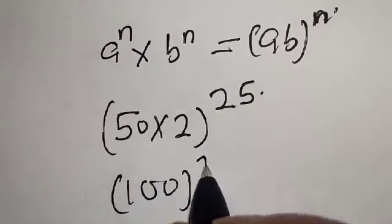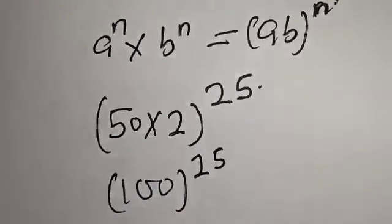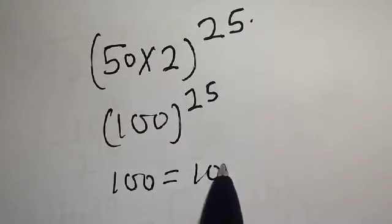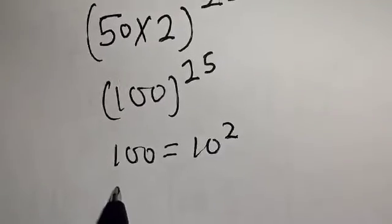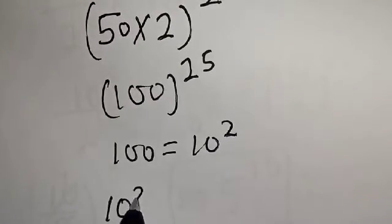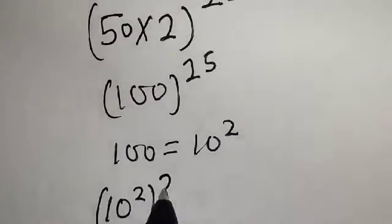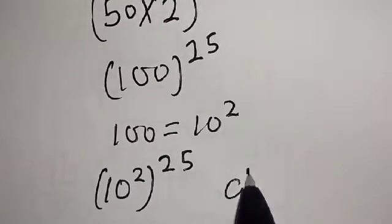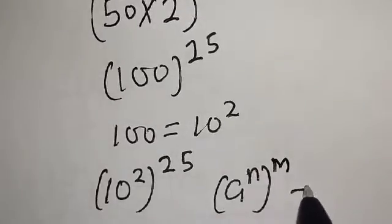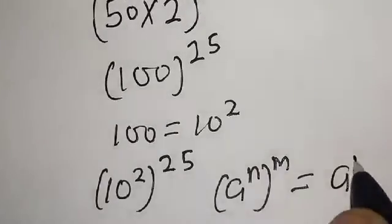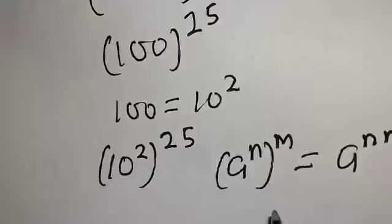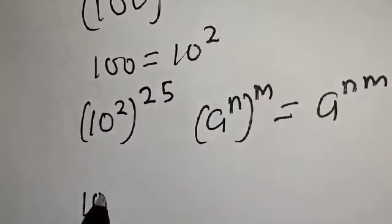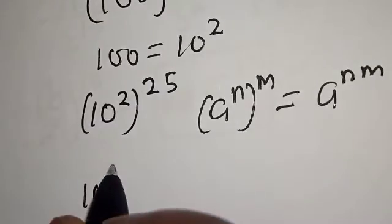100 raised to power 25. But remember that 100 is equal to 10 squared. Then we have 10 squared raised to power 25. Recall that if you have a raised to power n, raised to power m, it is the same thing as a raised to power n times m. Therefore our final answer is 10 raised to power 50.